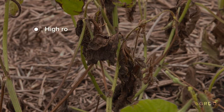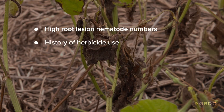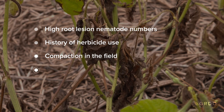The disease tends to be worse in paddocks that have some kind of stress — high root lesion nematode numbers, a history of herbicide use, or compaction in the field. Pretty much any type of stress, whether too much water or too little water. It can also be environmental, such as really hot weather for a few days followed by rainfall.